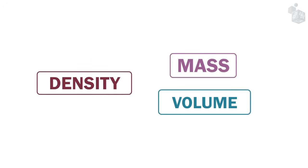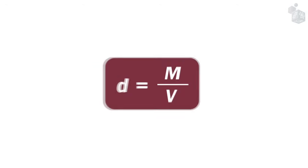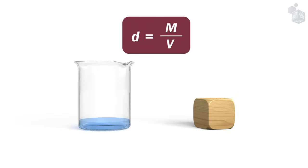On the other hand, density is the ratio between mass and volume. It is a property of materials, since each material has its own specific density.